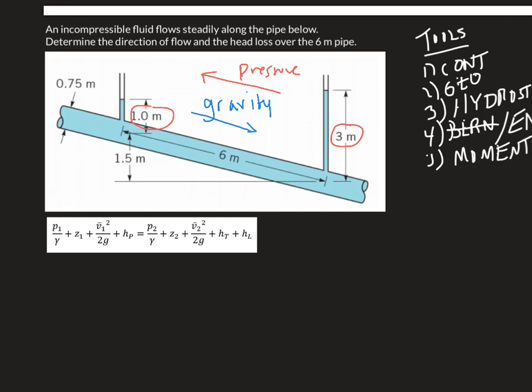Fortunately the energy equation has a direction to it, tied up in the subscripts one and two. We are going to assume that the flow is going from one to two, labeling the two endpoints accordingly, and work through the equation term by term to see what happens.